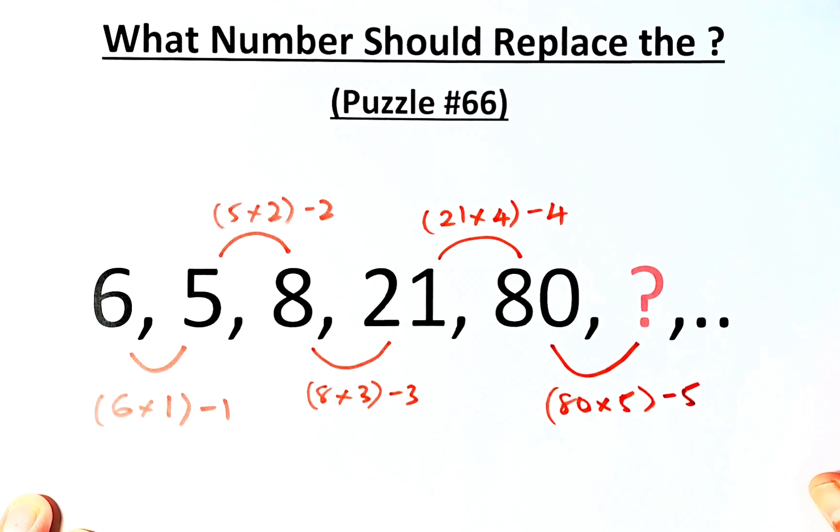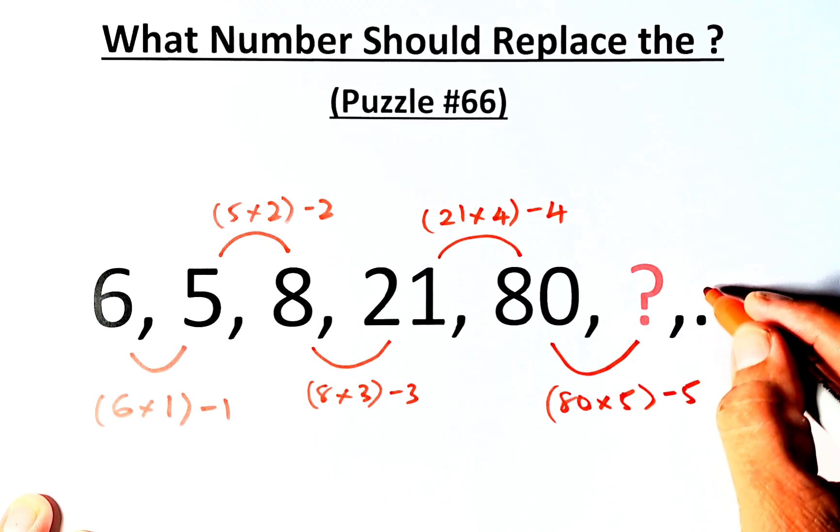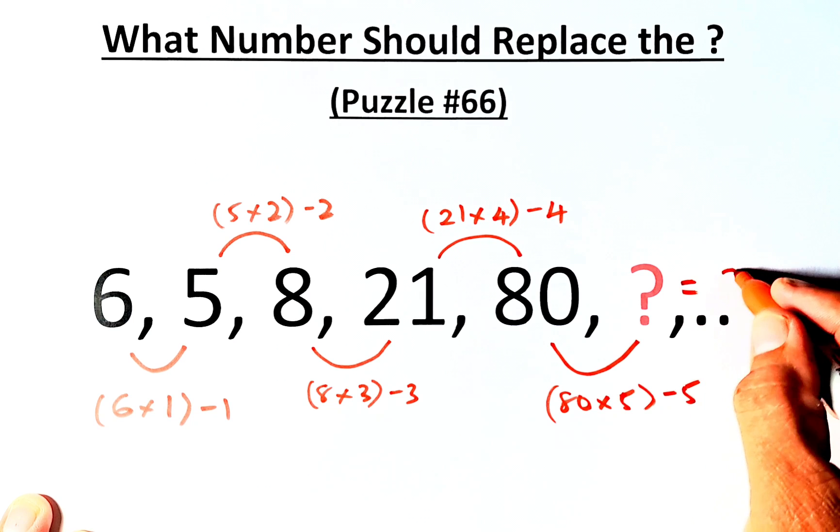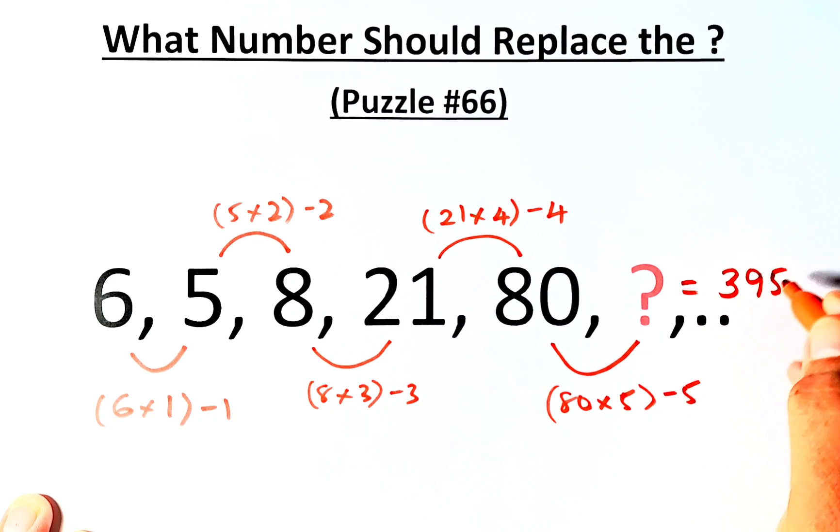80 times 5 is 400, and 400 minus 5, the answer, the question mark is going to be 395.